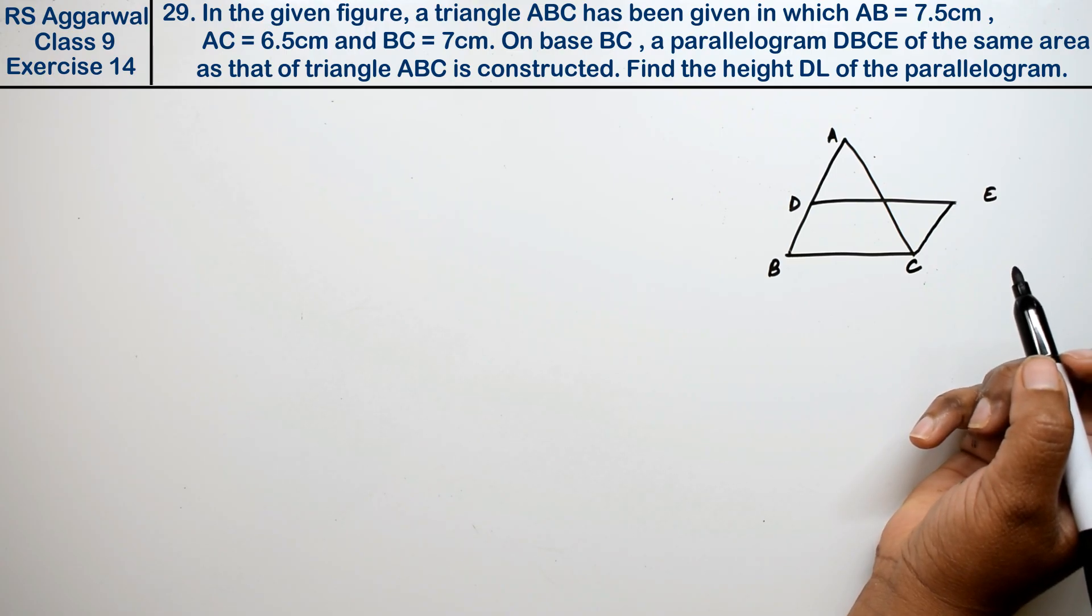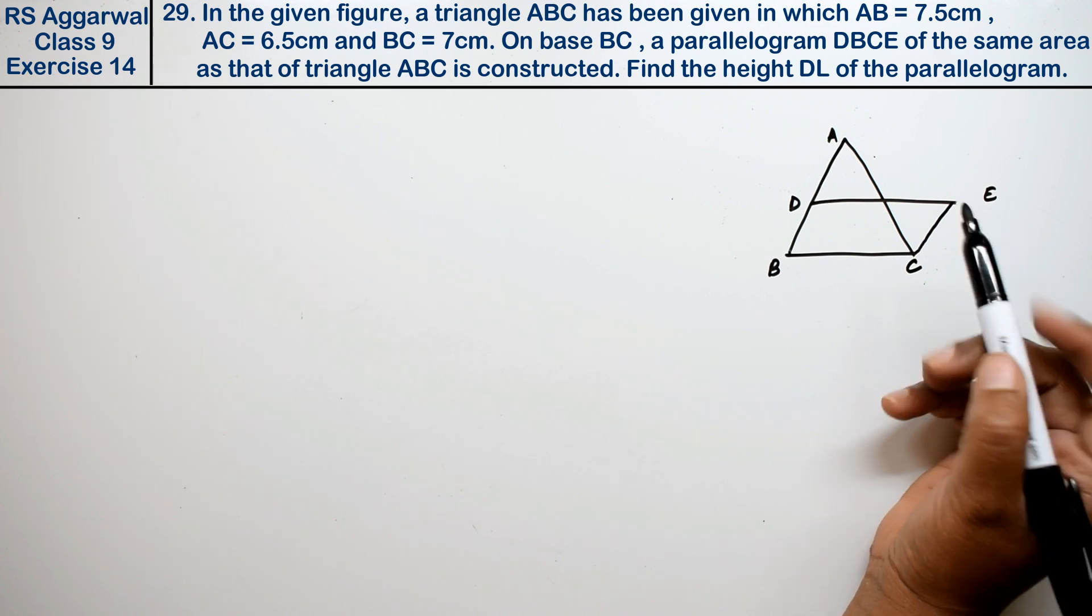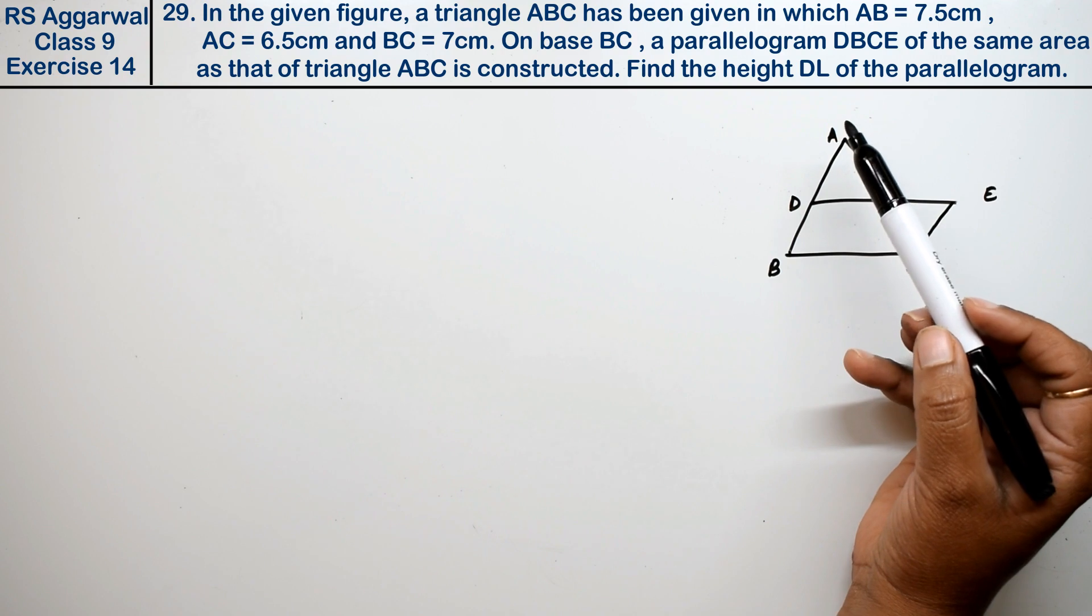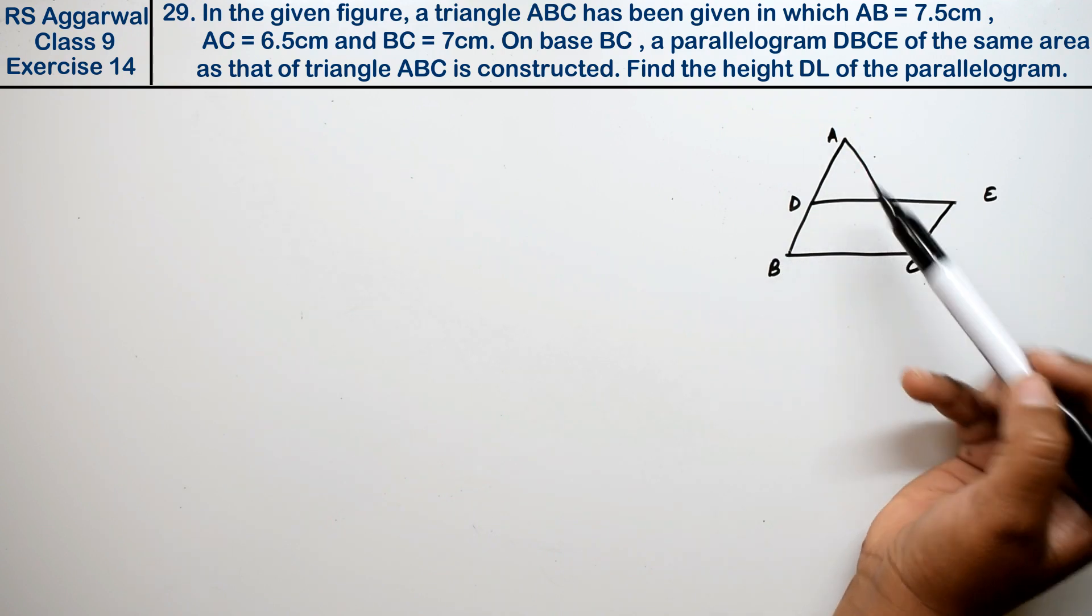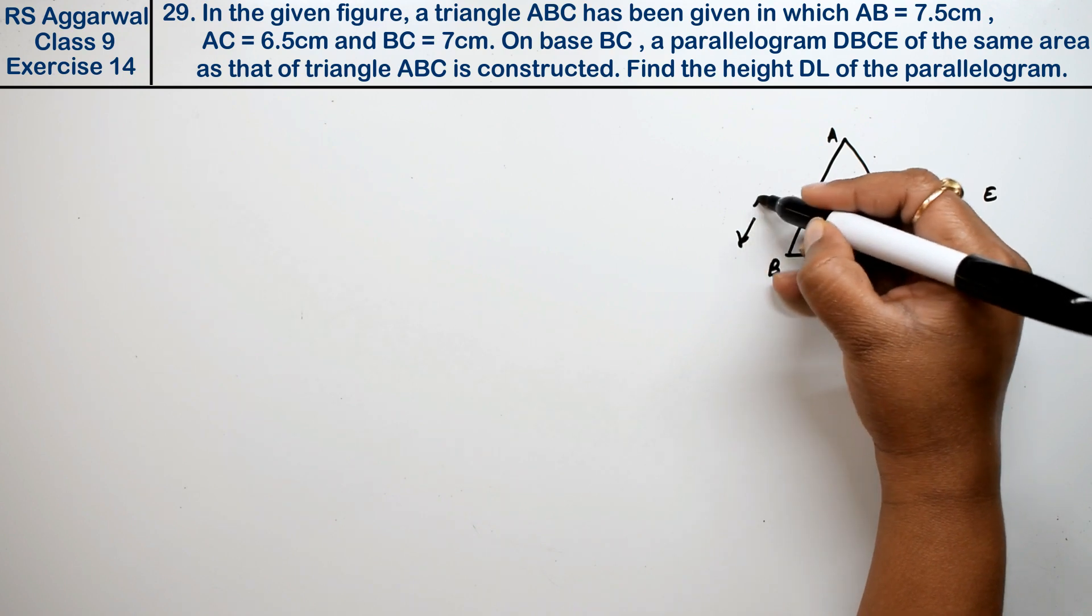Let's do question number 29 of exercise 14, that is area of triangles and quadrilaterals. In the given figure, triangle ABC has been given in which AB is 7.5 cm.